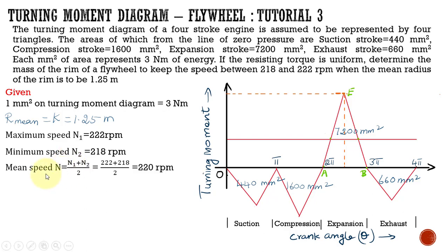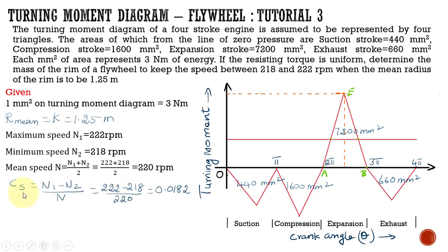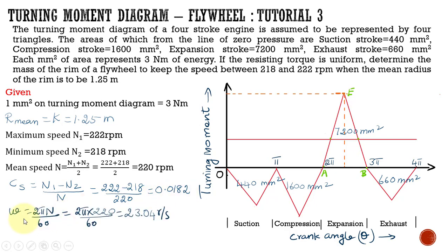For that we need to find out the mean speed. Mean speed is N1 plus N2 divided by 2, which is 220 RPM. The coefficient of fluctuation of speed is N1 minus N2 divided by N — that is 222 minus 218 divided by 220 — which equals 0.0182. The omega value is found using the mean speed: 2πN divided by 60, which is 2π × 220 ÷ 60 = 23.04 radians per second.